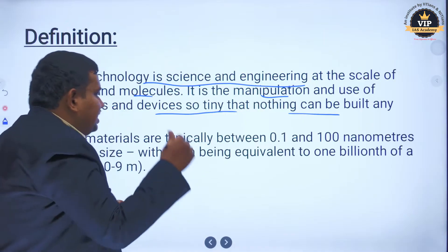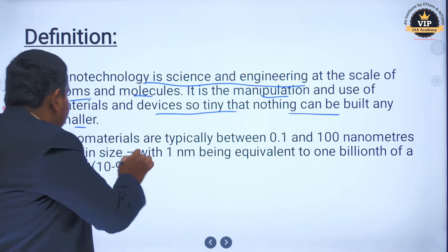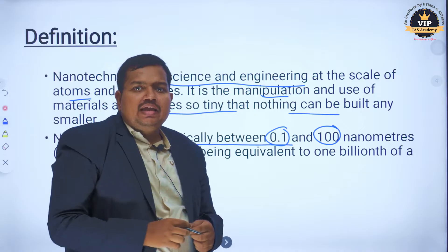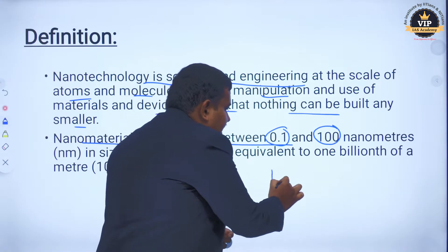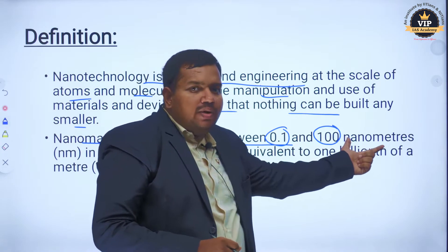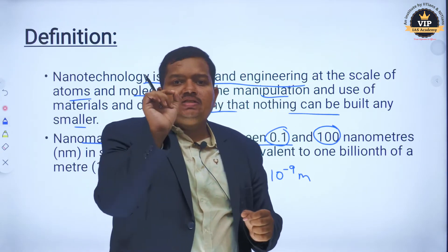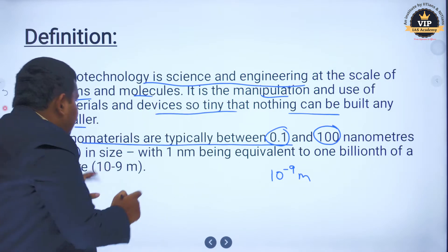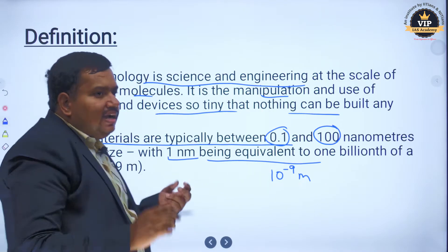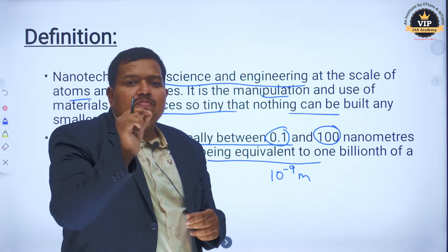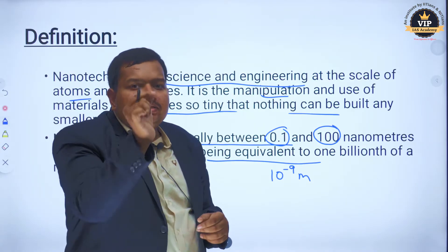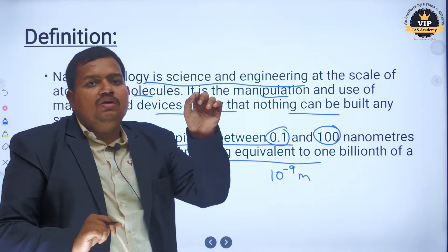What is 'nano' actually? Nanomaterials are typically between 0.1 and 100 nanometers. One nanometer is equivalent to one billionth of a meter, or 10 to the power of minus 9 meters. Particles and devices manufactured at that scale — 10^-9 meters — are called nanoparticles, and the field is called nanotechnology.